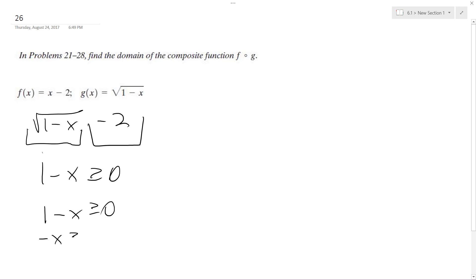Subtract 1, so negative x is greater than or equal to negative 1. And then divide through by negative 1, we get x, and you switch the signs as less than or equal to 1.